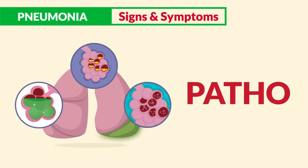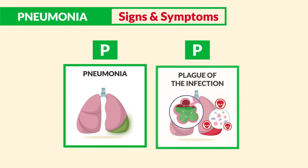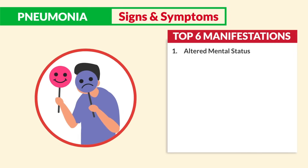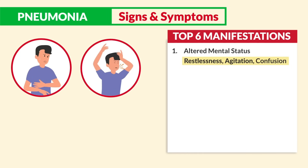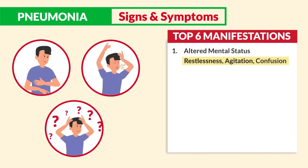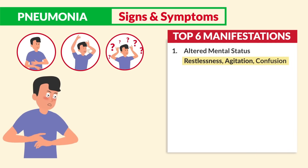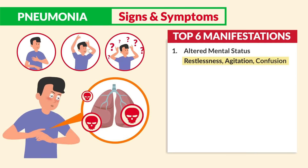For signs and symptoms, just think of the patho — P for pneumonia, P for a plague of infection inside the lungs. Write down these top six most tested key terms. Number one is altered mental status: restlessness, agitation, and confusion. These three are the earliest signs of hypoxia, and they are critical since hypoxia can lead to deadly respiratory failure.